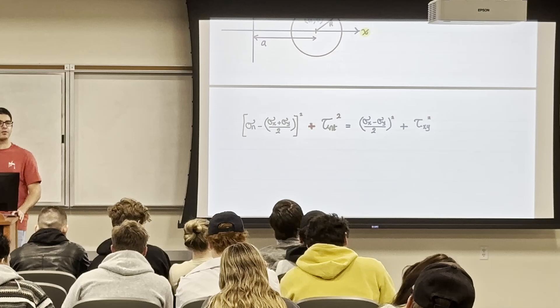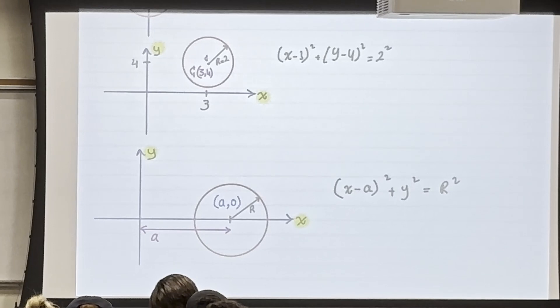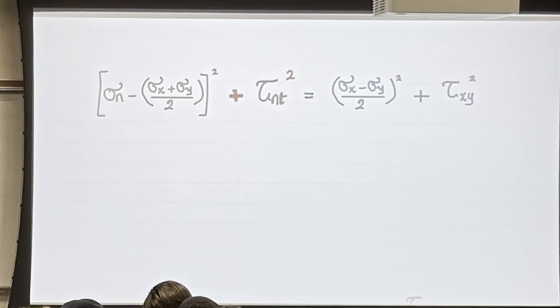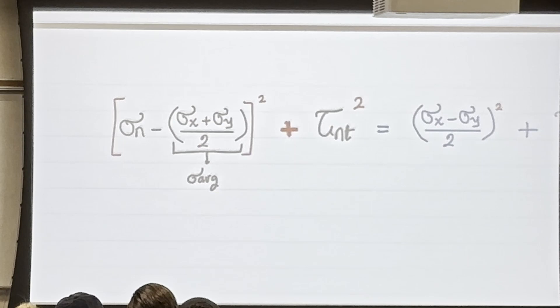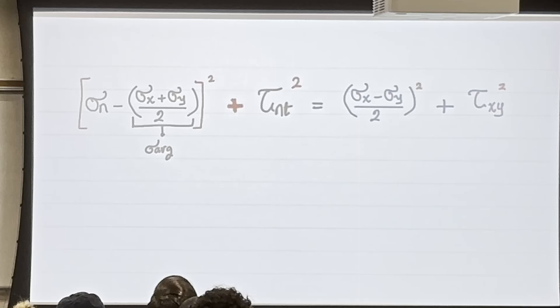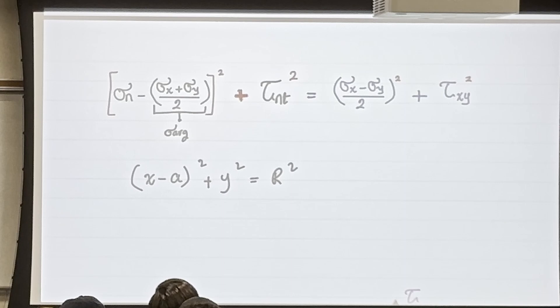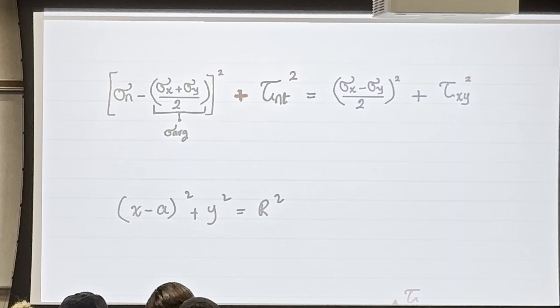This should be a plus — good catch. So σ_x+σ_y over 2 is what we agreed is σ_average, and since it's in the first term, this is actually σ minus σ_average, so σ_average is my 'a' — the shift in x. Then τ_nt squared is y² here, and this remaining term is r². The radius is the square root of ((σ_x−σ_y)/2)² + τ_xy².